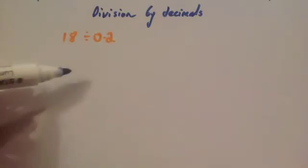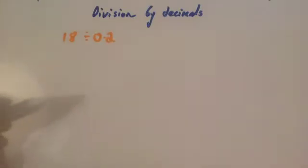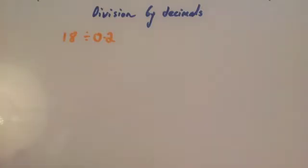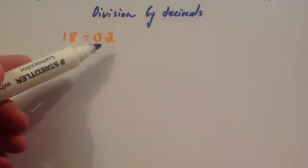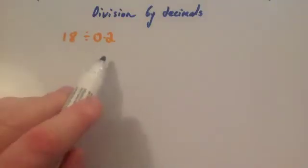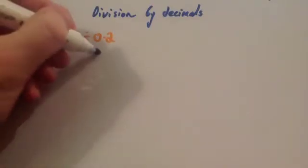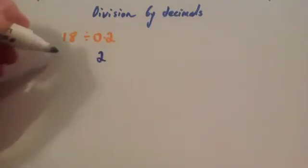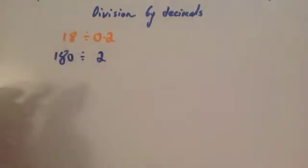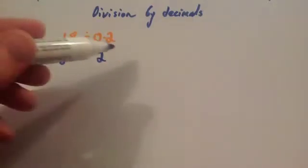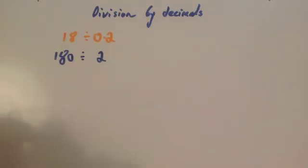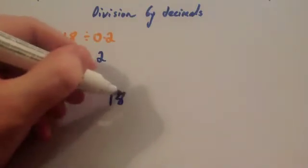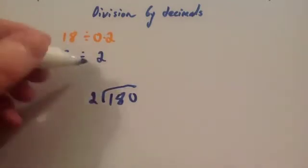Now we're going to look at 18 divided by 0.2. As we've just seen, you can multiply both numbers by 10, 100, or divide by 10 — you'll still get the same answer. Dividing by decimal numbers is quite tricky, so it's a lot easier if you change the number you're dividing by into a whole number. Multiplying 0.2 by 10 gives 2, and multiplying 18 by 10 gives 180. So we just need to do 180 divided by 2.